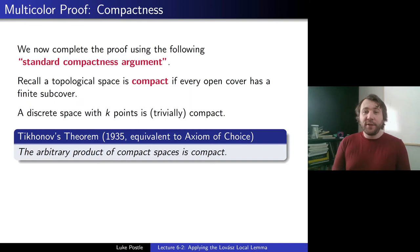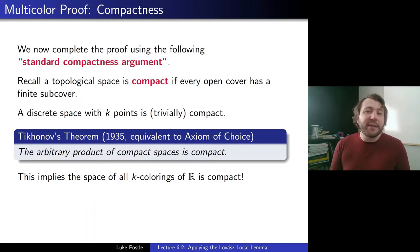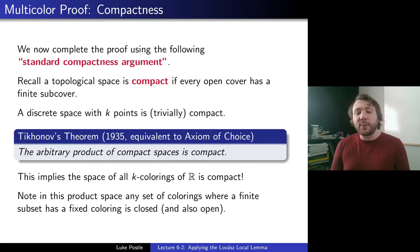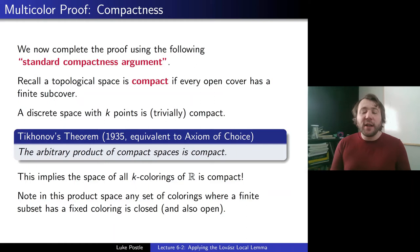So what good is this? In this product space, any set of colorings where a finite subset has a fixed coloring is closed — and also open. More generally, by finite union and intersection, if you look at a finite subset and fix a set of possible colorings and their extensions, that too would be closed or open. This means we can conclude that for every x in R, letting Cx be the set of k-colorings of the reals such that x + S is multicolored, Cx is closed. Why? Because x + S is a finite subset of R, and the multicolored sets are just various colorings of that set extended to R.